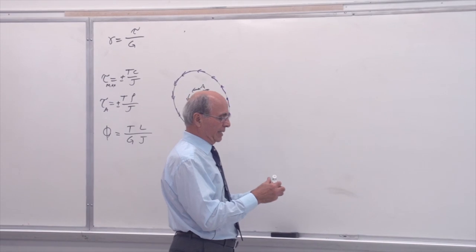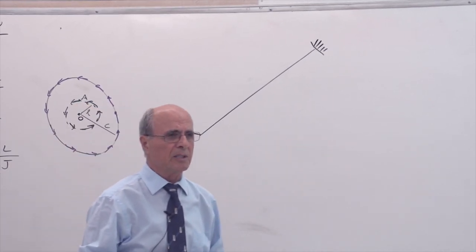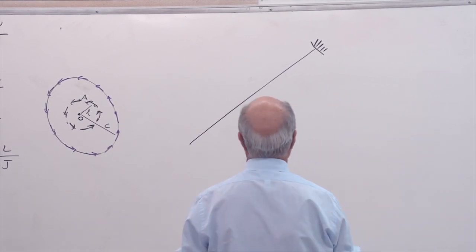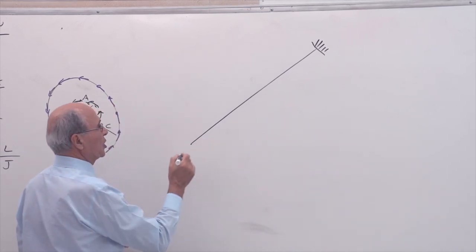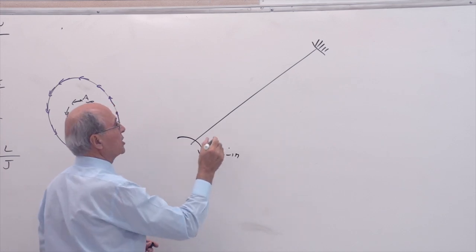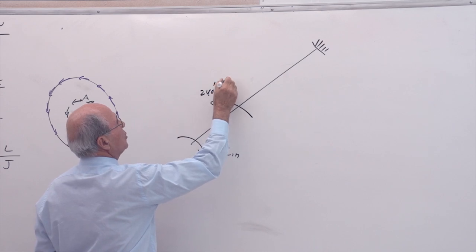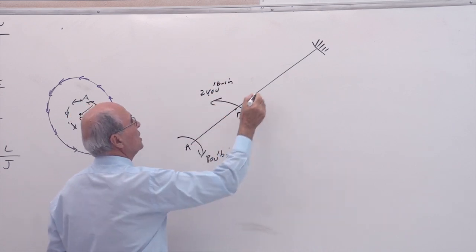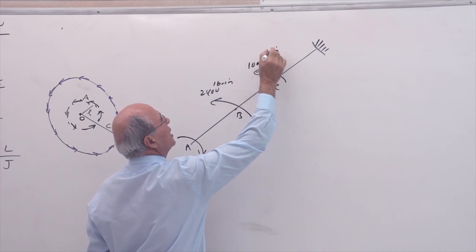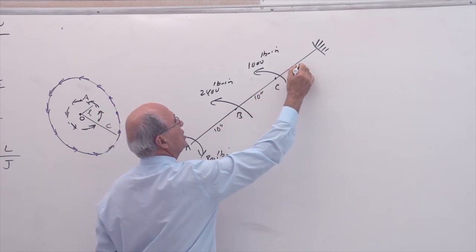Let's move on to the problem we had last time. We had shaft ABCD with a torque of 800 pound-inch at point A, another torque of 2400 pound-inch at point B, and at point C a torque of 1000 pound-inch. The lengths are all 10 inches.